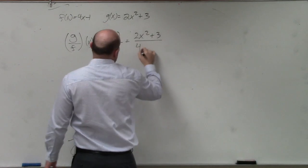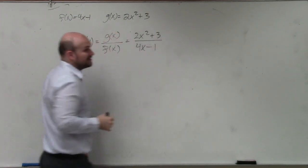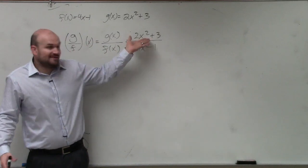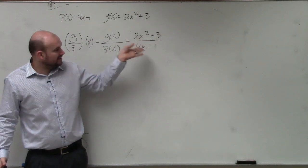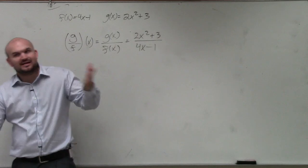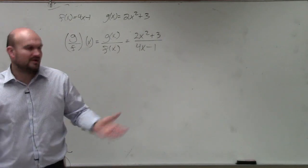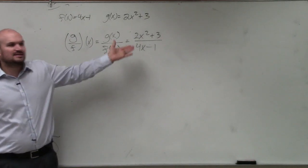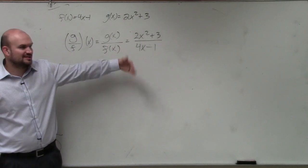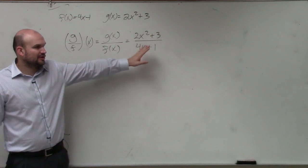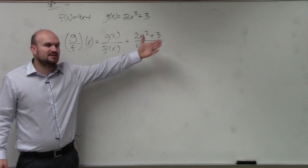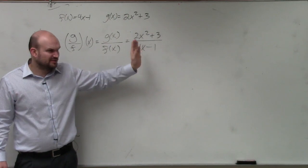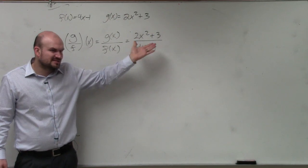What I taught last class period was simplifying by factoring. But in this example, there's nothing really for us to factor. We can't factor 2x squared plus 3, and we can't factor the 4x minus 1. Yes, you could look into division by using long division or synthetic division in this case, but that's not really going to simplify this any further. It's just going to give you a quotient plus a remainder — it doesn't evenly divide. Does everybody agree? You'd see it doesn't evenly divide, so it doesn't really simplify this anymore.